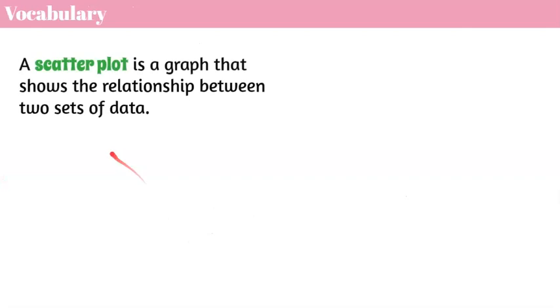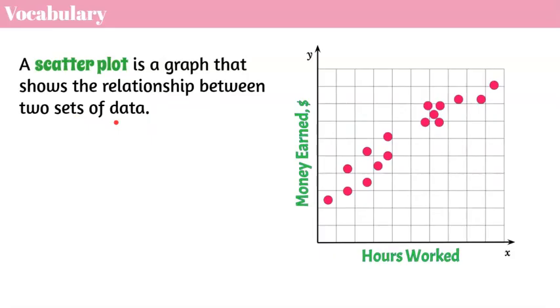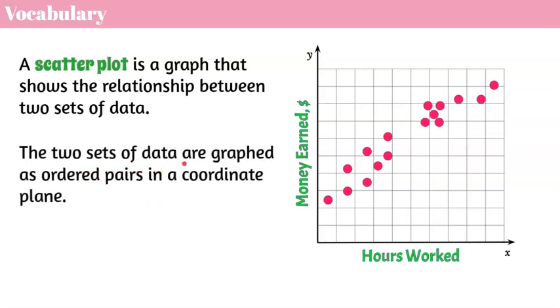Let's begin by understanding some key vocabulary words. Our lesson is on scatterplot. A scatterplot is a graph that shows the relationship between two sets of data. Here is an example of a scatterplot. It's called a scatterplot because all the points are scattered about the graph, and you're going to see very different relationships here. We're talking about a relationship between the amount of hours worked and the amount of money earned — two different sets of data graphed as ordered pairs on the coordinate plane.